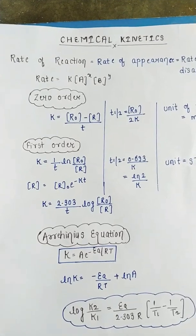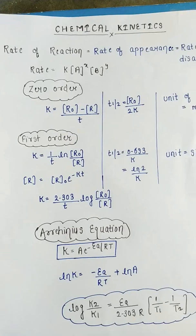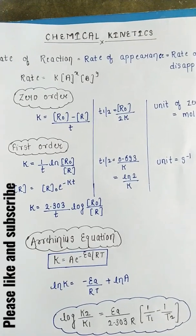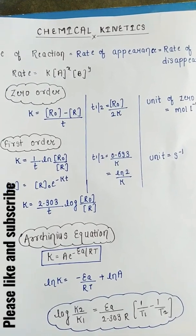Another most important term is Arrhenius equation where k equals A exponential minus Ea by RT, where Ea is activation energy. It's also written in logarithmic form as log k₂ by k₁ equals Ea by 2.303R times (1 by T₁ minus 1 by T₂).